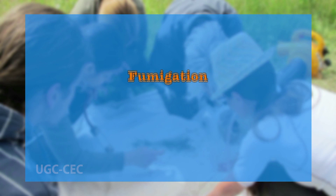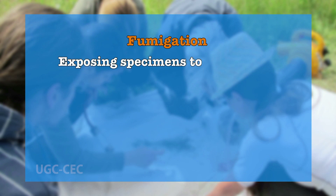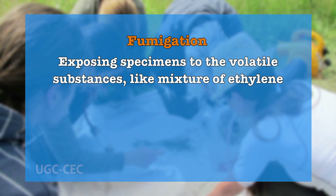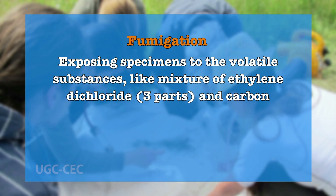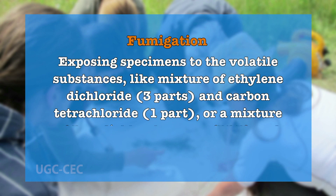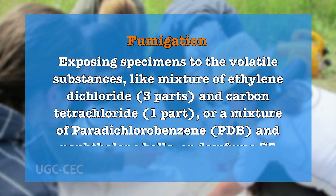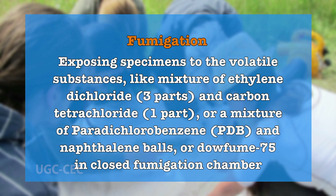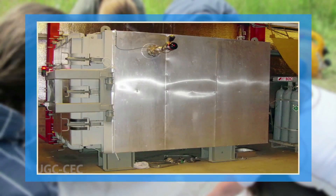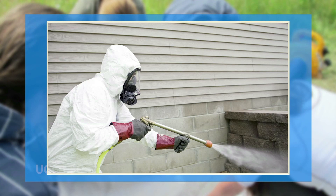Fumigation — fumigation involves exposing specimens to volatile substances like a mixture of ethylene dichloride and carbon tetrachloride, or a mixture of paradichlorobenzene and naphthalene balls, or dowfume 75 in a closed fumigation chamber. The herbarium specimens are kept in the fumigation chamber for 7 to 10 days, and the fumigation chamber should not be opened during the period of fumigation.